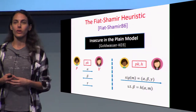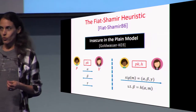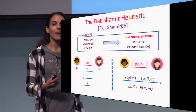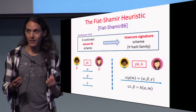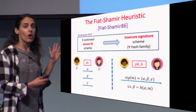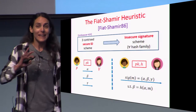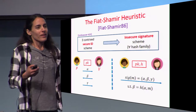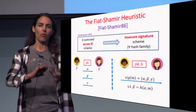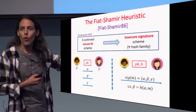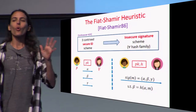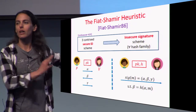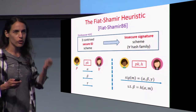In 2003, together with Shafi, we gave a negative result. We gave a contrived example of a secure ID scheme for which the corresponding signature scheme will be insecure no matter which hash function you use. This ID scheme is contrived, so it didn't really say 'don't use the hash function.' The take-home message was: don't try to prove a general possibility result for the Fiat-Shamir paradigm, because we do have counterexamples. In general, it's not always secure.